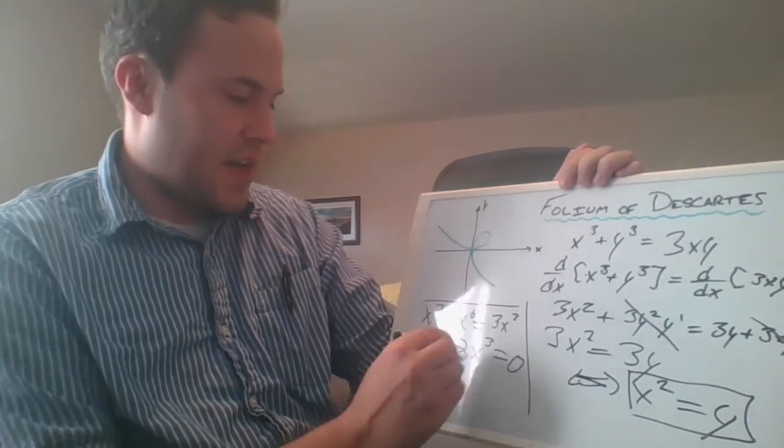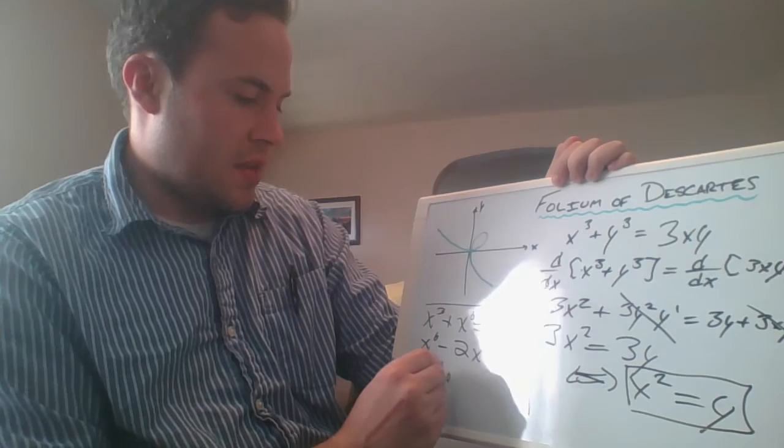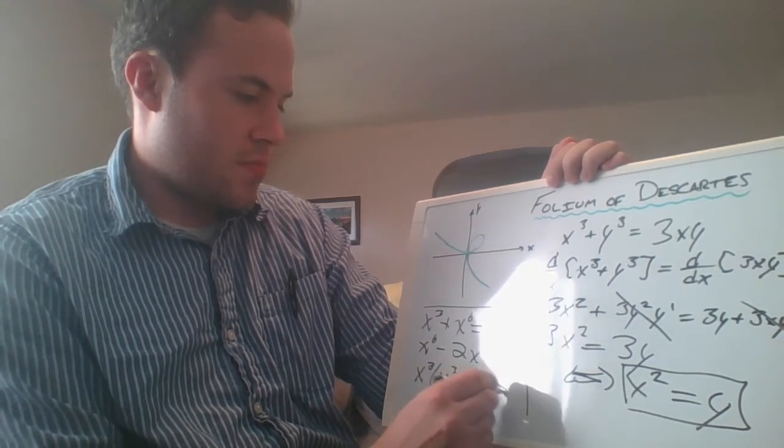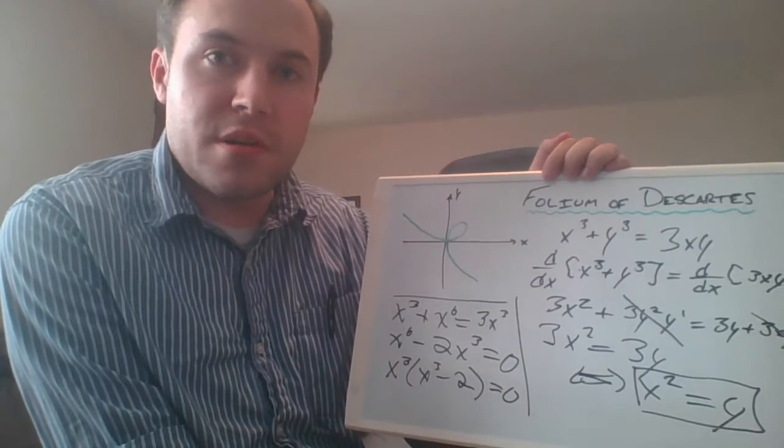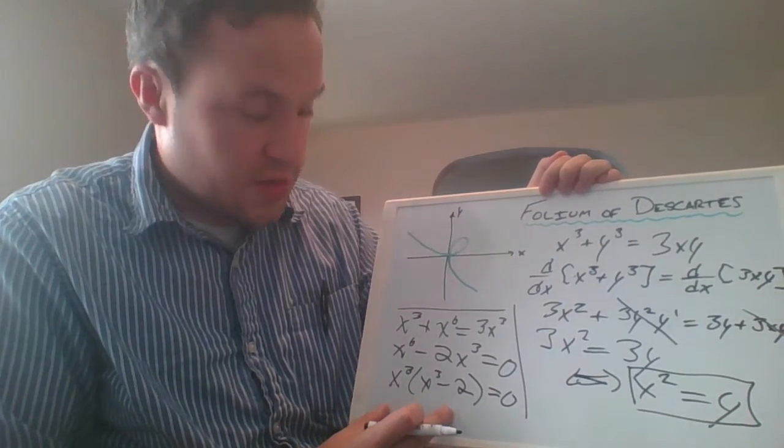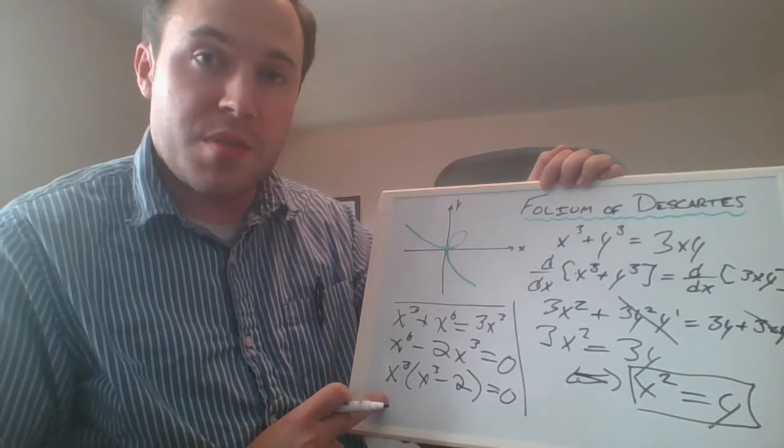And this we know how to solve. Factor x cubed out of this, that leaves us with x cubed times x cubed minus 2 equals zero. So we have two distinct solutions to this.